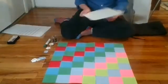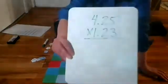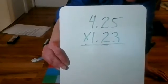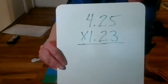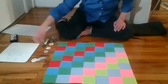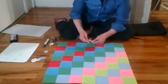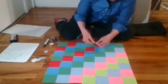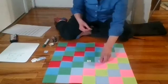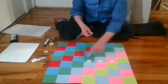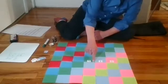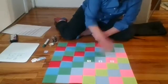The problem we are going to do together today is 4 and 25 hundredths times 1 and 23 hundredths. The first thing we need to do when working with the checkerboard — any checkerboard, decimal or whole number — is set up our multiplicand, which in this case is 4 and 25 hundredths. So I have 4 units, 2 tenths, and 5 hundredths — 4 and 25 hundredths.